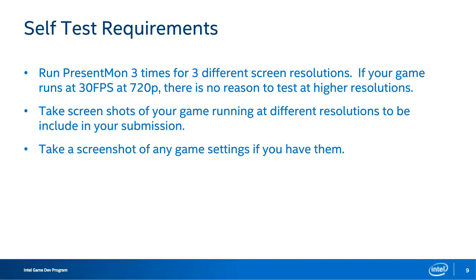When testing, run your workload three times at each resolution and graphics level. We take the median of the three runs for the final result. If your title includes a benchmark, use it for testing. If there's no benchmark, find a repeatable and reliable location to test. Also, take a screenshot of the game settings and gameplay at each setting tested. The screenshots let us see how you define low, medium, or high for your title and how the game looks at those respective settings.